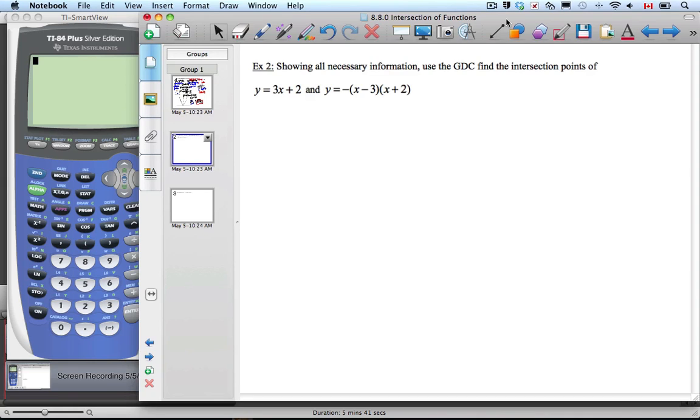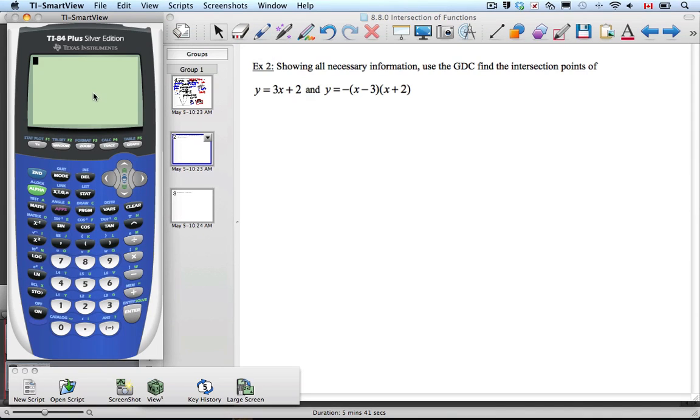Functions. Show all necessary information. Use the GDC to find the intersection points of y = 3x + 2 and y = -(x-3)(x+2). So all we have to use here is our graphing calculator. If we go over to our graphing calculator, put in the two equations, which we can all do, and then we're going to graph it.